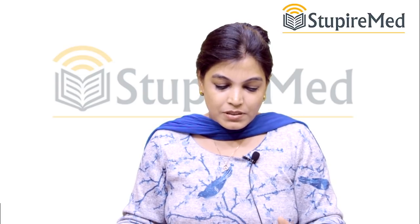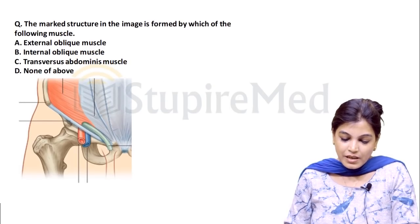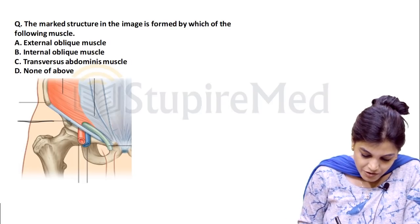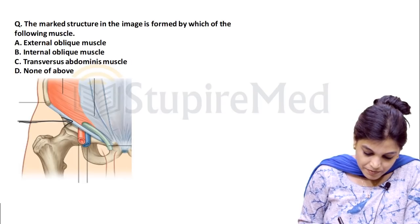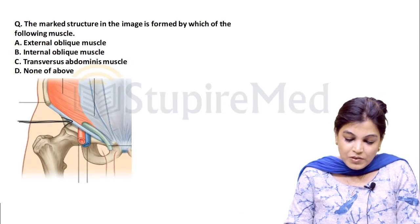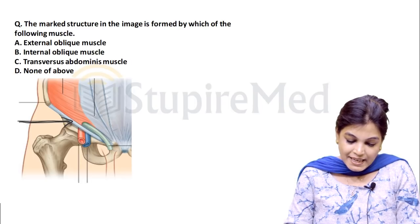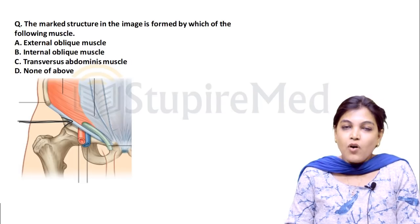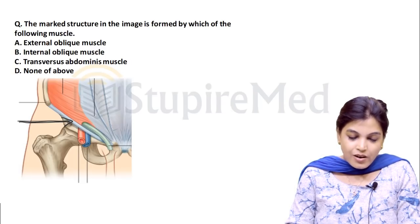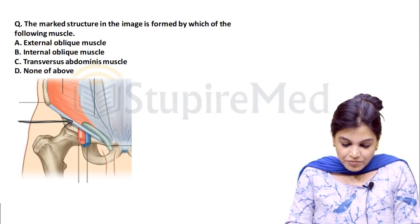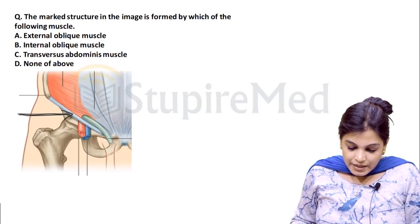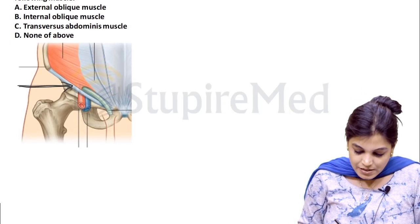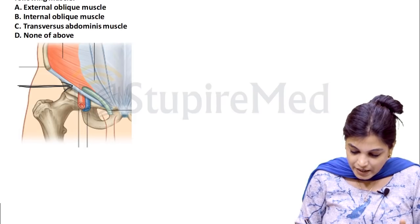Question number one: the marked structure in the image is formed by which of the following muscle? Option A is external oblique muscle, option B is internal oblique muscle, option C is transverse abdominis muscle, option D is none of the above. Now let's identify the structure — the marked structure here is the inguinal ligament.